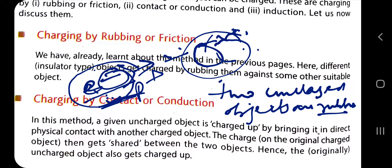For example, if a person is walking on a carpet with socks, electrons move from the carpet into the socks. This causes an overall negative charge on the socks. Similarly, clothing that sticks together when taken out of the dryer is another example of charging by friction.